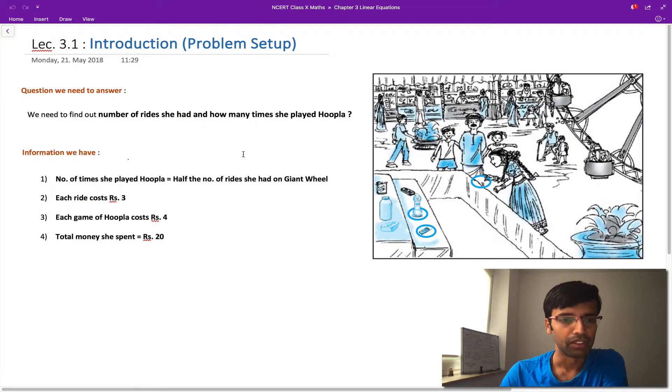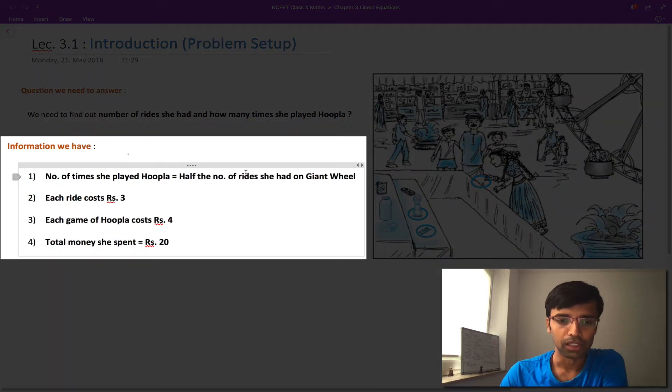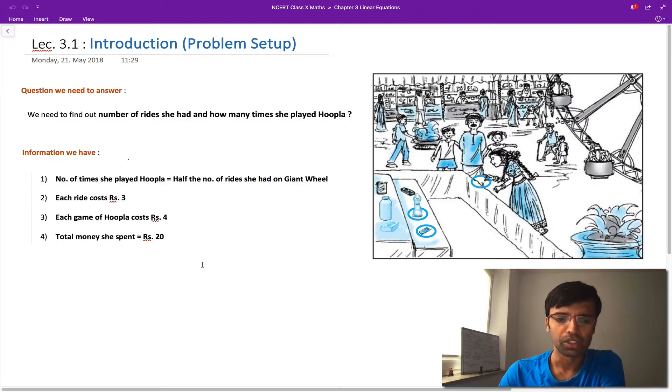The information we have is: the number of times she played hoopla is half the number of rides she had on the giant wheel; each ride cost rupees 3; each game of hoopla cost rupees 4; and the total money she spent was rupees 20. So what do we do now? Maybe you start thinking of random numbers, like if she played maybe three giant wheels, three times three is nine, and one hoopla, but nine plus four is thirteen—it doesn't make sense. You can continue making random guesses, but then you say no, let me use some of the things I have learned earlier.